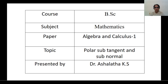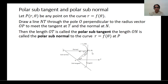Hello everyone, myself Dr. Oshiratha Keynes. Now we shall discuss polar subtangent and polar subnormals. Let P of R, theta be any point on the curve R = F(theta). Draw a line NT through the pole O perpendicular to the radius vector OP, to meet the tangent at point T and the normal at point N. Then OT is called the polar subtangent and ON is called the polar subnormal for the curve R = F(theta).